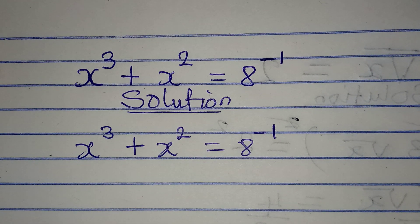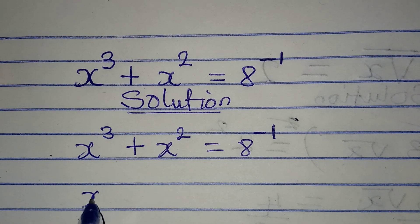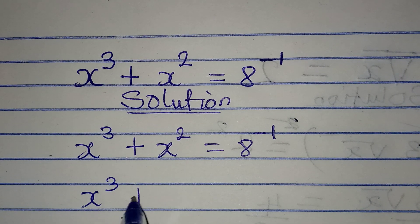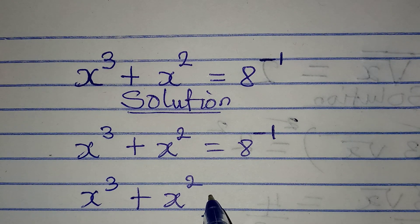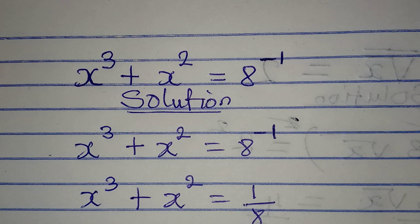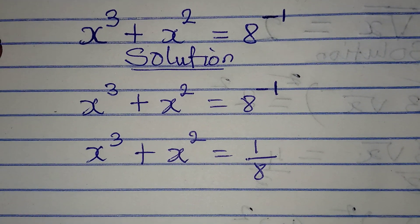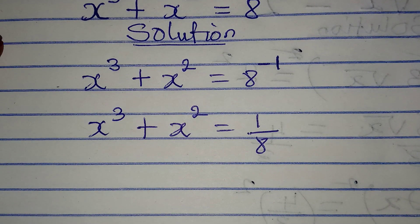If we take it a step further, this will be x to the power of 3 plus x to the power of 2 equals 1 over 8. This is according to the law of indices.